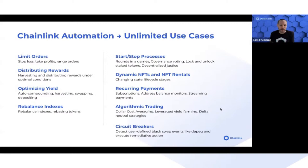One final and key use case enabled by smart contract automation is circuit breakers. Automation could detect a rare event like a black swan event — it might be user-defined or something standard — and then perform some sort of remediative action automatically.